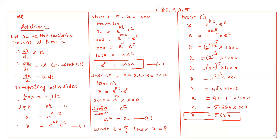Then we arrange this. So dx upon x equals k dt. Now integrating both sides: integration of 1 upon x gives log of mod of x, equal to kt plus c.